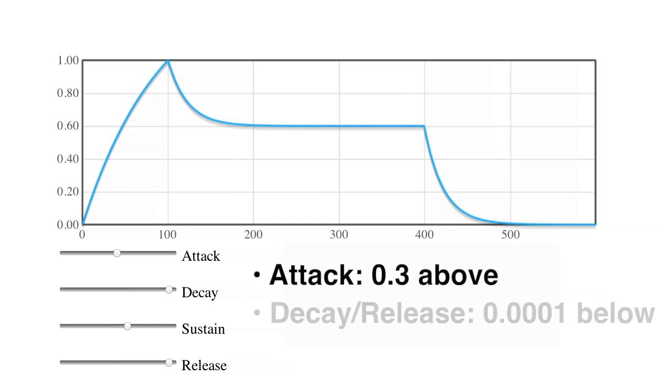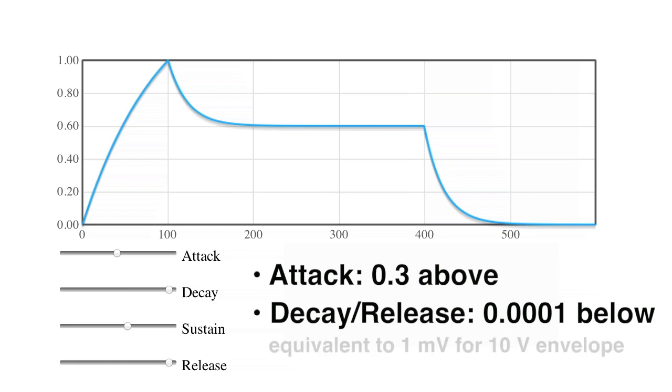For decay and release, the discharge target is 0.0001 below the sustain and zero levels, which is equivalent to maintaining the exponential shape till minus 80 dB for full scale, then truncating.